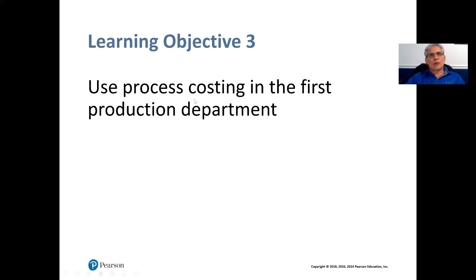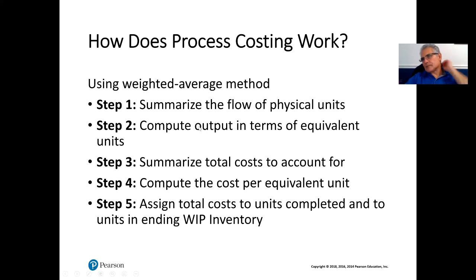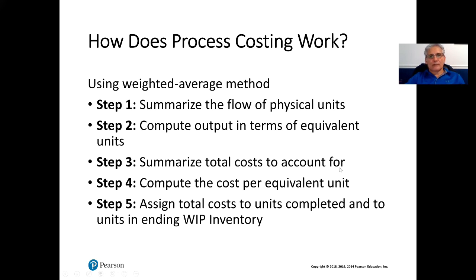Learning objective number three: use process costing in the first production department. How does process costing work using the weighted average method? Step one: summarize the flow of physical units. Step two: compute output in terms of equivalent units. Step three: summarize total costs to account for. Step four: compute the cost per equivalent unit. Step five: assign total costs to units completed and to units in ending work in process.